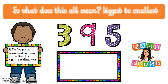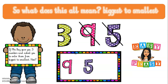So what does this all mean? If Mrs. Day gave you 3 numbers and asked you to order them from biggest to smallest, how would we do that? Here are our 3 numbers: 3, 9, and 5. What is the biggest number? That's correct — 9. We then scratch out the number we've written down so we remember we have already used it. The next biggest number is 5. Well done. Don't forget to scratch it out. And the last number would be 3, and we scratch that out too.